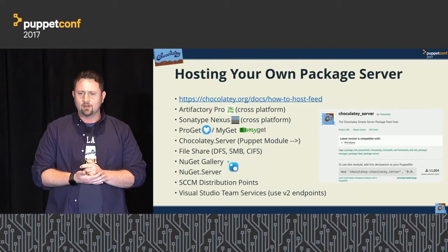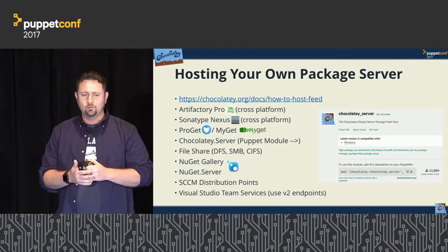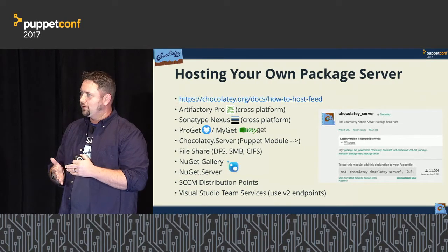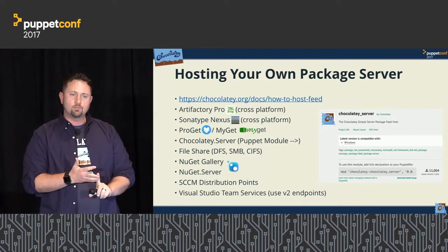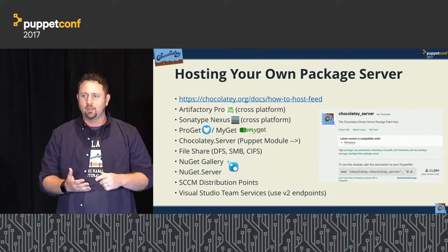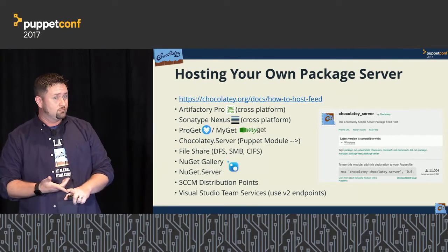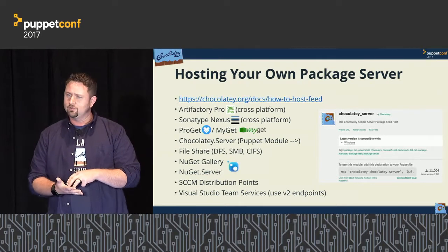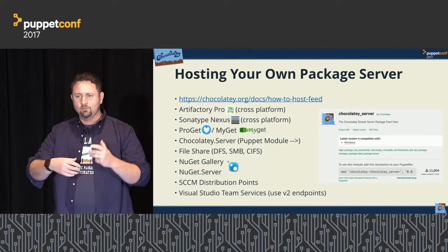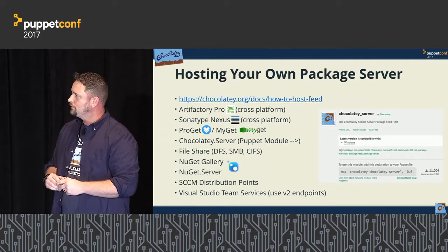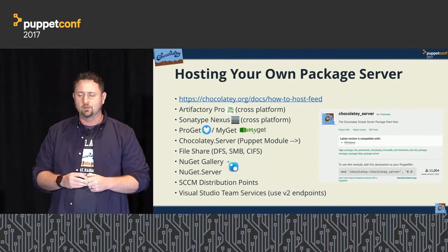Package repositories — lots of options. You can get started as simply as a file share or set up the Chocolatey server Puppet module. ProGet, Nexus, and Artifactory Pro are what we recommend for most organizations wanting an on-prem solution. They support multiple Chocolatey-type repositories as well as RPMs, DEBs, and Puppet modules. They also support package promotion — multiple repositories and just pushing packages around. MyGet is more of a hosted solution if you want to pass infrastructure off to somebody else.